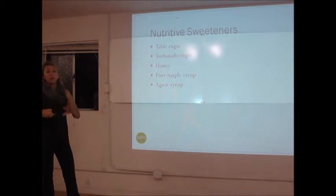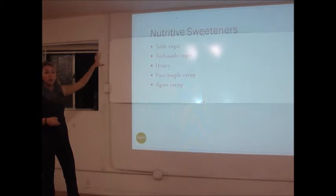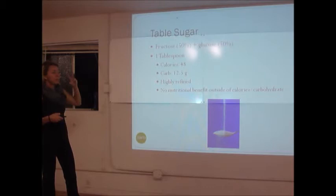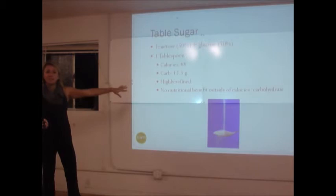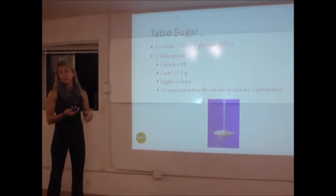What can we do instead? Nutritive sweeteners — things with calories — are what I'd push you towards, used in moderation. Table sugar is 50% fructose and 50% glucose, with 48 calories and 12.5 carbs per tablespoon. The problem is it's highly refined; you don't find it in nature like this, and in the processing we lose a lot of vitamins and minerals. So you're just getting calories and carbohydrate from table sugar — not the best choice, though maybe better than some artificial sweeteners.